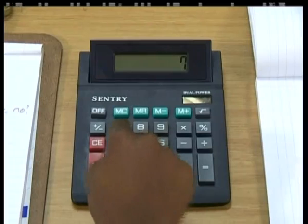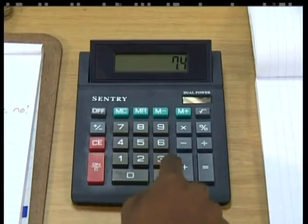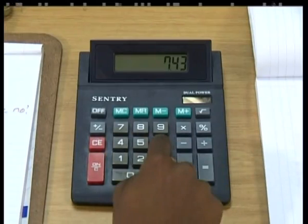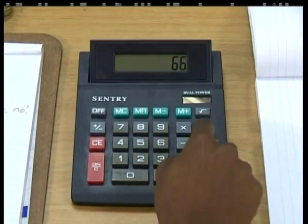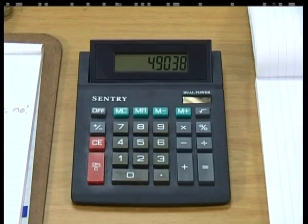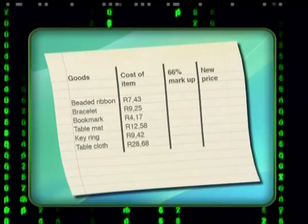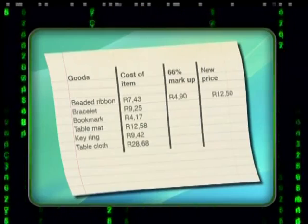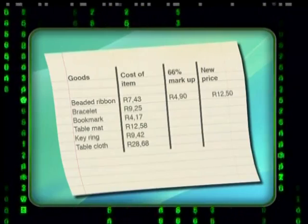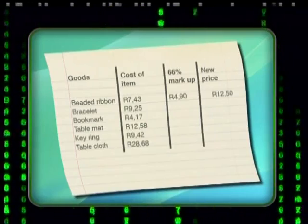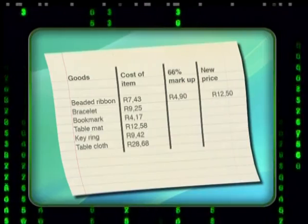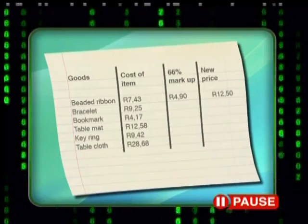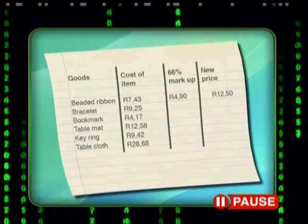Let's see — 7 rand and 43 cents multiplied by 66% equals 4 rand and 90 cents. I've filled in the markup and added it to the cost price. The total comes to 12 rand and 33 cents. I've rounded this off to the next 50 cents. So the new price for the beaded ribbon is 12 rand 50. I'll repeat the same steps to work out the rest of the prices.